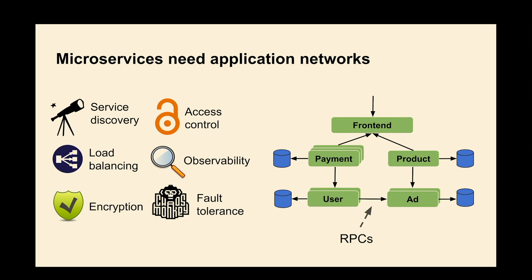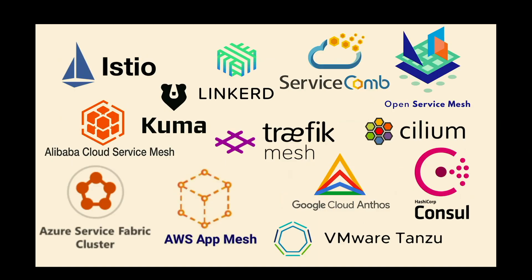When things go on the network, a lot changes: failure modes change, performance characteristics change, security characteristics change. The whole ecosystem of software infrastructure builds up to enable this — we've disaggregated the application and need control back. You need service discovery, access control, load balancing, observability, encryption, fault tolerance — needs that did not exist before are suddenly there. This is why service meshes exist, and surveys show over 90% of enterprises use one.